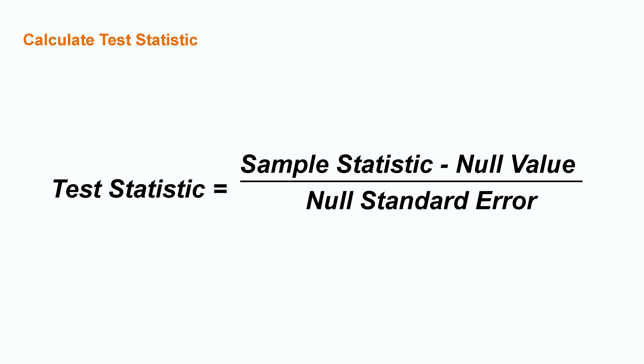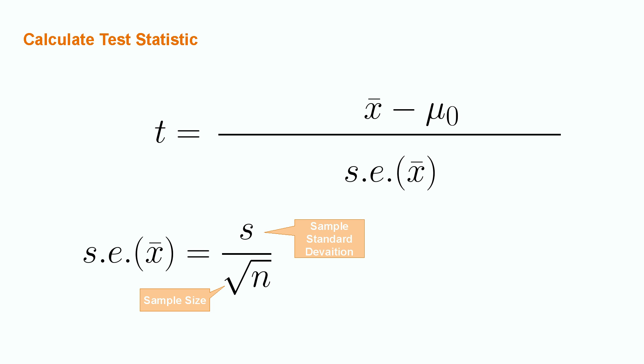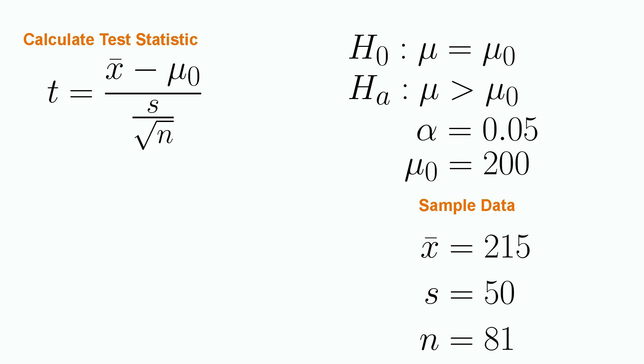The basic form of the test statistic is equal to the sample statistic minus the null value divided by the standard error. In the specific case of the single population mean, our test statistic will be a t statistic, our sample statistic will be x-bar — that is the average we calculate from the sample data — and the null value is simply mu0. The standard error associated with x-bar will be equal to the standard deviation of the sample data divided by the square root of the sample size. Let's provide some data for our problem. We have observed a mean of 215 passengers on the train cars observed, setting our value of x-bar. We also observe a standard deviation of 50 passengers over a sample size of 81 observations. It should be relatively straightforward to calculate the test statistic from the equation above. Pause the video for a moment to work out this value.